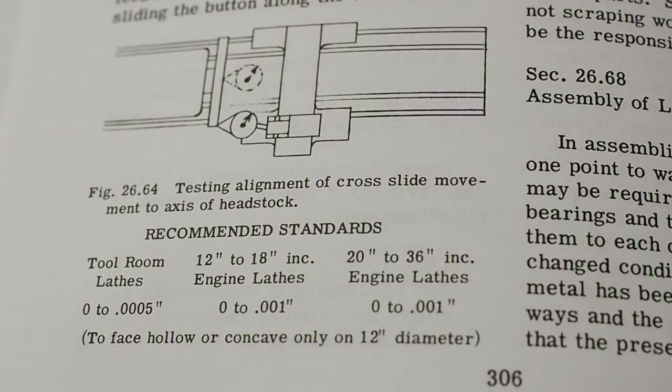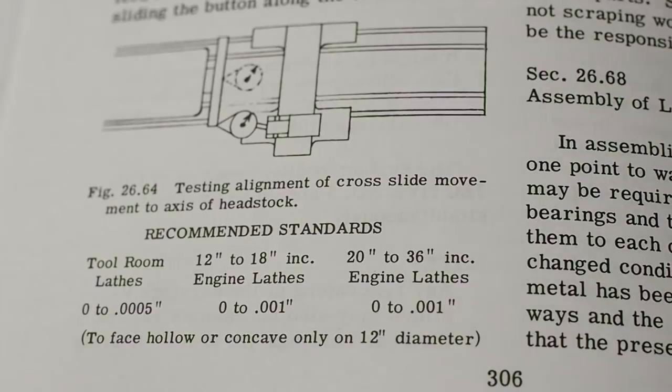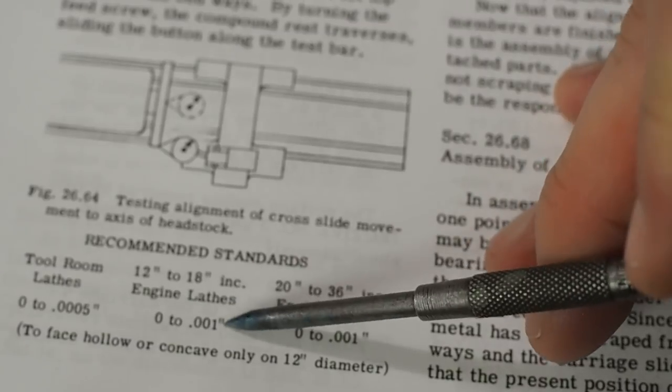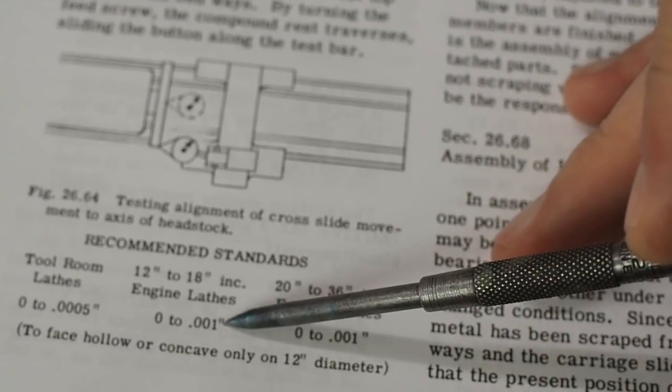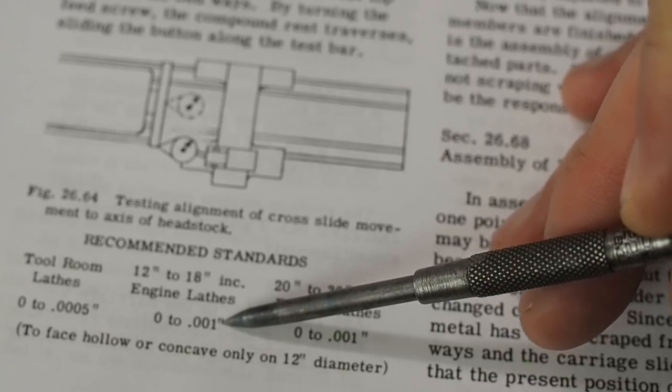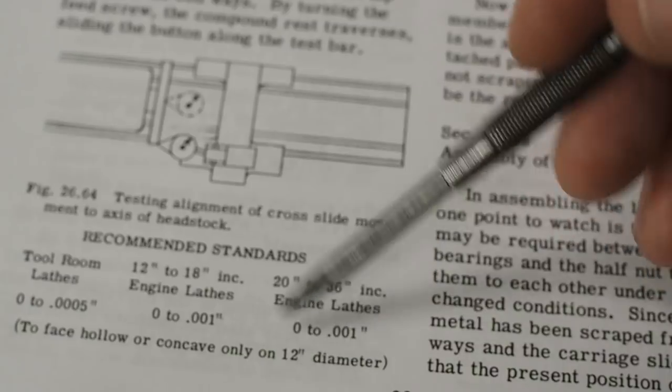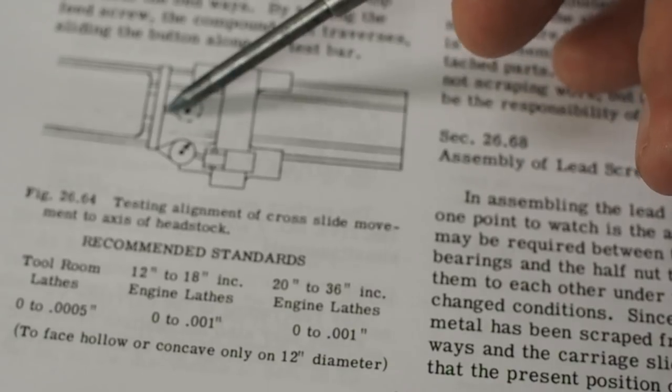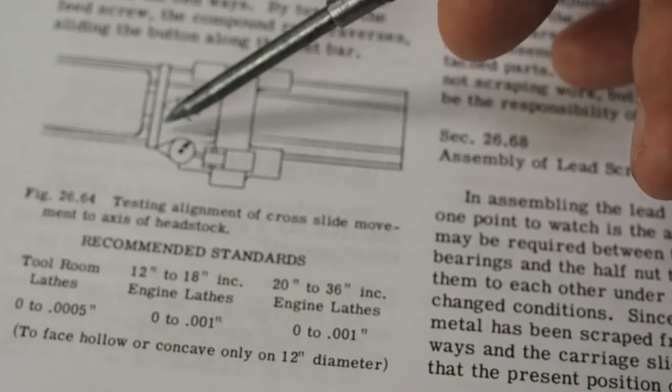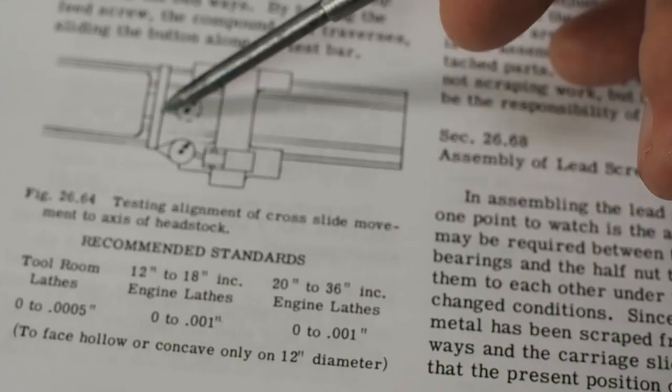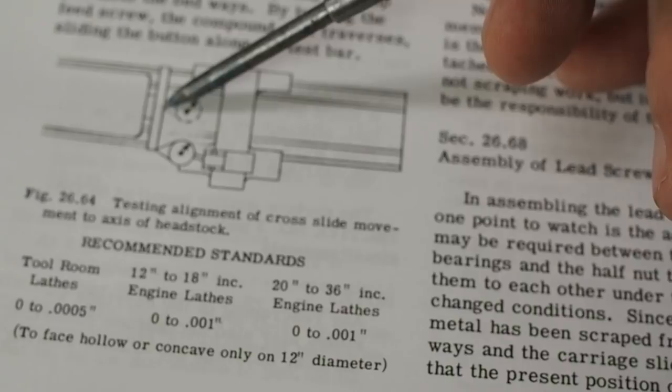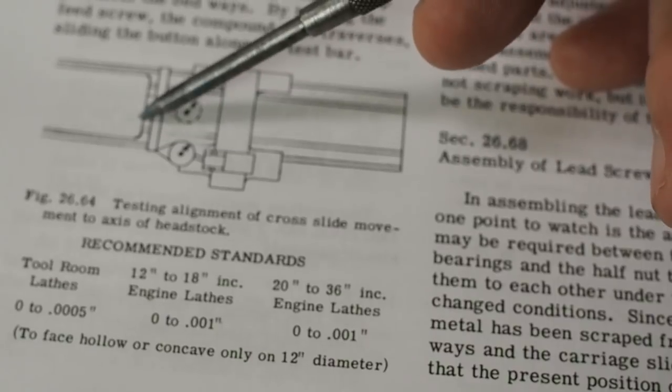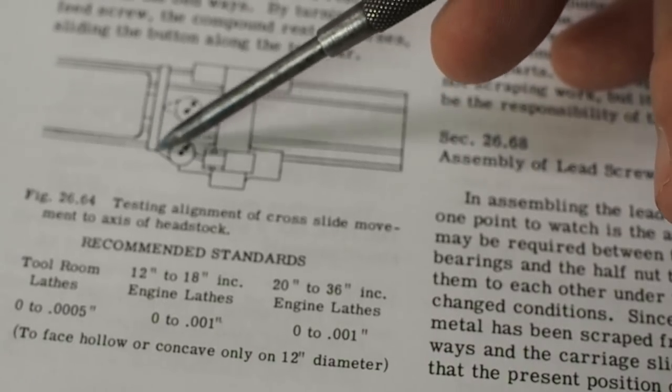Here's Connolly's take on this, on the required accuracy. You can see they're recommending for a 12 inch swing lathe, a maximum of 1 thousandth of an inch of concave, I guess you'd call it. So a 12 inch swing would mean a 6 inch radius, 6 inches being 15cm. So you're looking at a maximum of 1 thousandth of an inch over 15cm, or 6 inches.